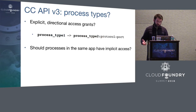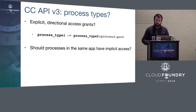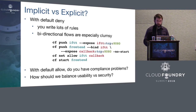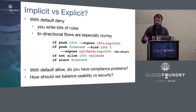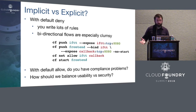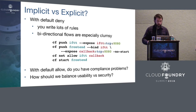This gets a little more complicated with Cloud Controller version 3 — you might specify process types as opposed to applications. There's also the question of implicit versus explicit: whether there should be some kind of default allow rule where all processes within an application can talk to each other. To summarize: with a default deny rule, you're going to have to write a lot of explicit allow rules to set up your application, and doing things bi-directionally gets messy. But with a default allow rule, the security folks may get concerned and say they want to know explicitly where traffic is going. So this question of usability versus security — we'd like some input from people to hear what you think.